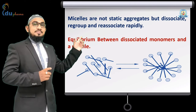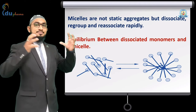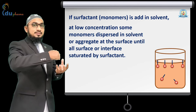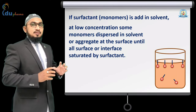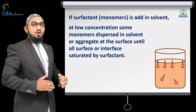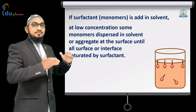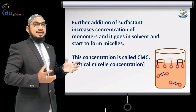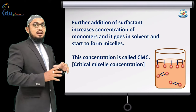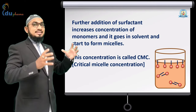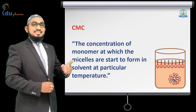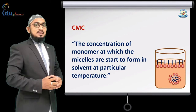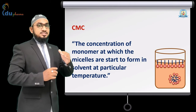As you can see, the equilibrium is established between dissociated monomers and a complete micelle. If surfactant is added in a solvent at low concentration, some monomers disperse in the solvent or absorb at the surface until all the surface or interface gets saturated by the surfactants. Further addition of surfactant increases the concentration of monomers, which then start to form a micelle, and this concentration is called the critical micelle concentration. We can simply define critical micellar concentration as the concentration of monomer at which micelles start to form in a solvent at a particular temperature.